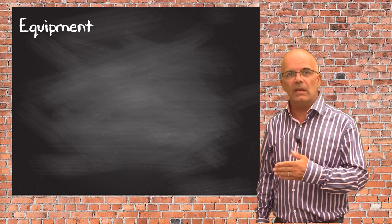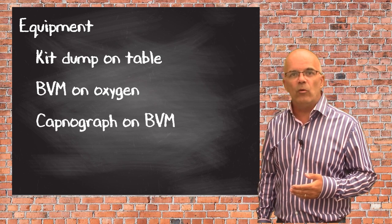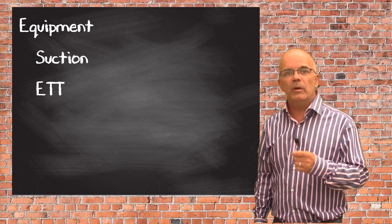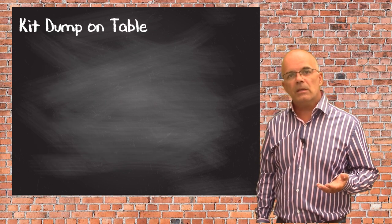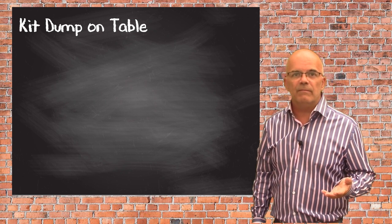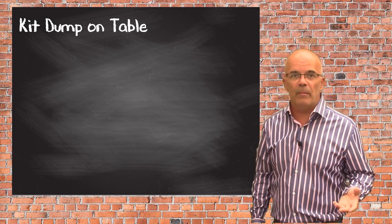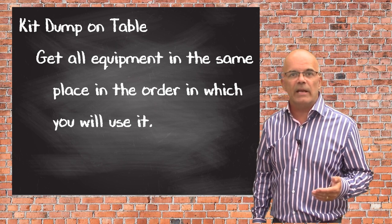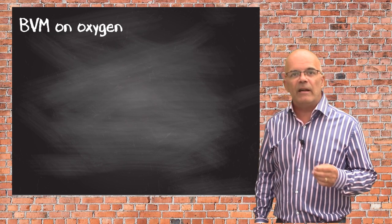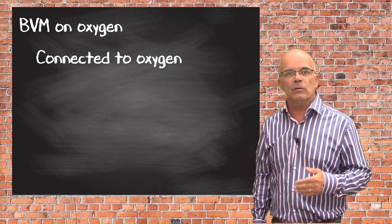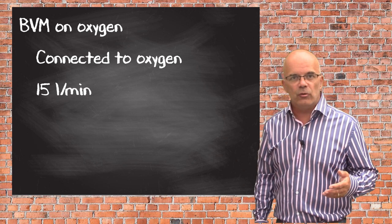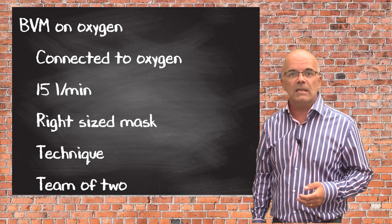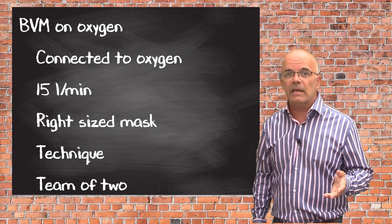Equipment is broken down into: kit dump on table, BVM on oxygen, waveform capnograph on BVM, laryngoscope and backup/video laryngoscope, suction, ET tube, bougie, and supraglottic airway. It's a big mistake to have equipment in various places around the patient — get all your equipment in the same place, lined up in the order you plan to use it. Ensure the BVM is connected to oxygen at at least 15 litres per minute, the face mask is an appropriate size with a good seal, using the thenar eminence technique or working as a team of two if needed.